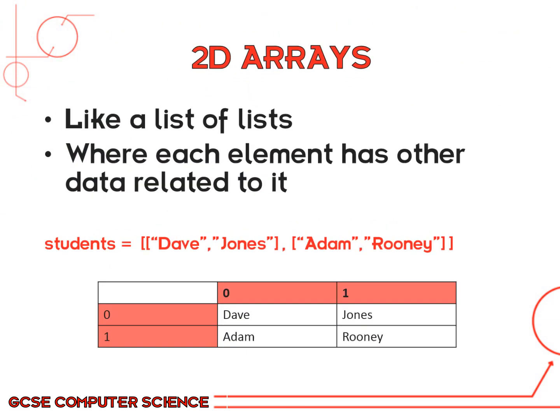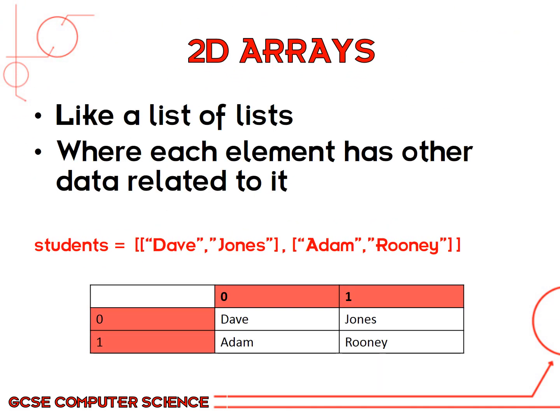A two-dimensional array is a little bit more complicated. The best way to picture it — I always imagine a spreadsheet, like a Microsoft Excel spreadsheet, with the cells going across the columns and the rows going down. If you think of it like that, as a spreadsheet, it makes it easier to understand how to access the elements. It's like a list of lists.